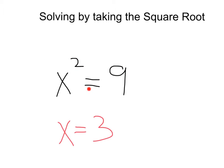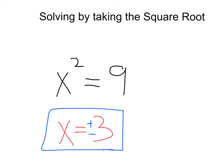We can definitely see that 3 is a solution — 3 squared definitely equals 9. But we actually have to consider something else. What if x was negative? Is negative 3 squared equal to 9? Well, negative 3 times negative 3 is 9. So when you take the square root, you have to take into account both the positive and negative solution. We do that by writing plus or minus, giving us x equals positive 3 or negative 3.